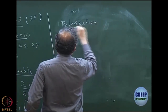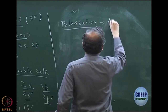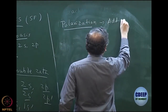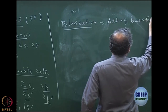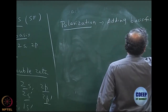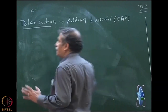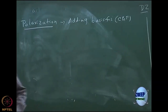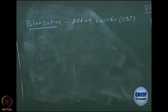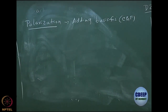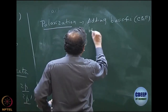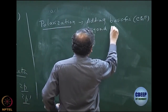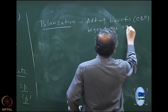So what is polarization? This is adding basis functions to the contracted functions. When I say basis functions, it means Slater or contracted Gaussian functions — they are identical, it is just that we are not actually using Slater. So polarization means adding more basis functions beyond the valence angular momentum.